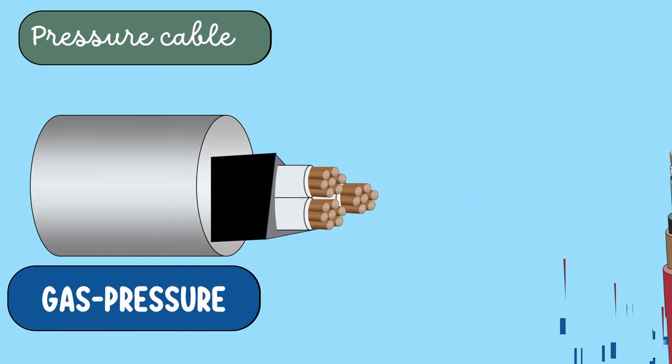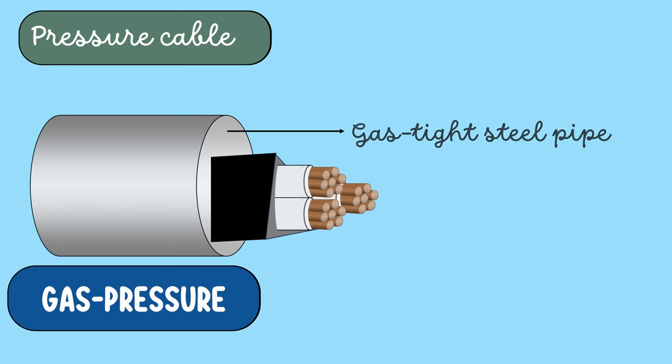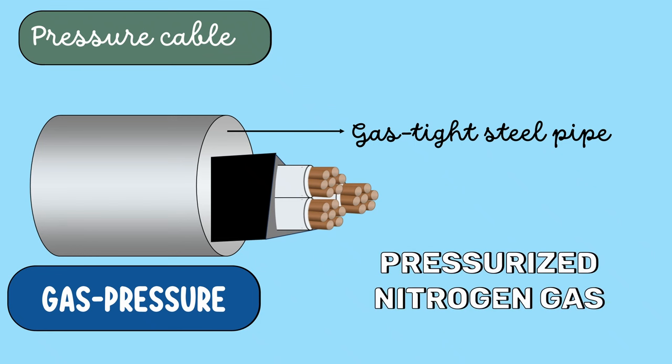Now, let's talk about gas pressure cables. Here, the cable is very similar to solid type cable except that it is of triangular shape. The cable is placed inside a gas-tight steel pipe. The pipe is filled with pressurized nitrogen gas. The pressure closes the voids by compression. These cables can carry more load current and operate at higher voltages than a normal cable.